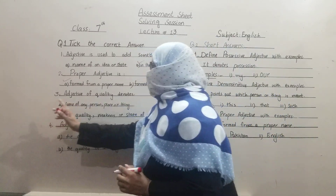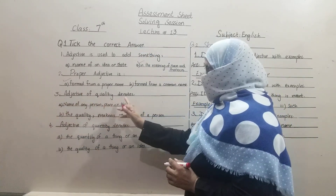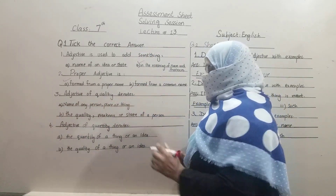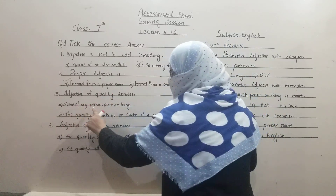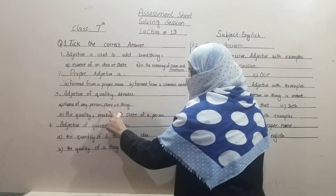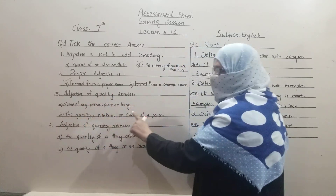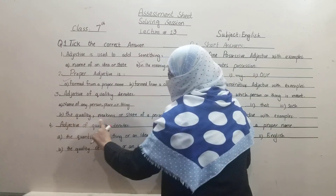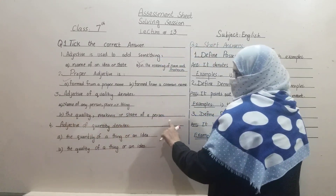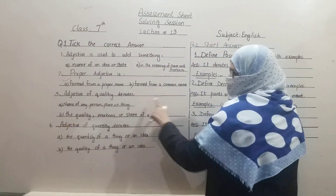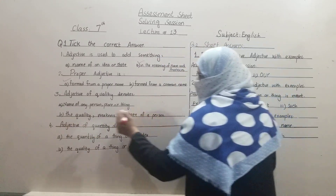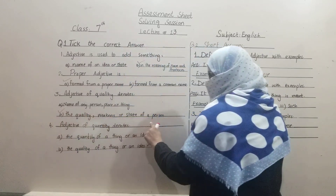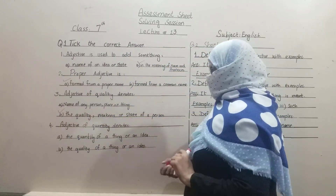MCQ 3 — adjective of quality denotes: Option A: name of any person, place or thing. Option B: the quality, weakness and state of a person. The correct answer is: the quality, weakness and state of a person.